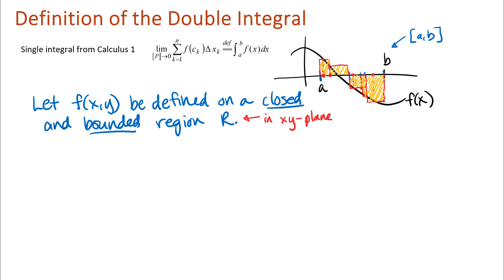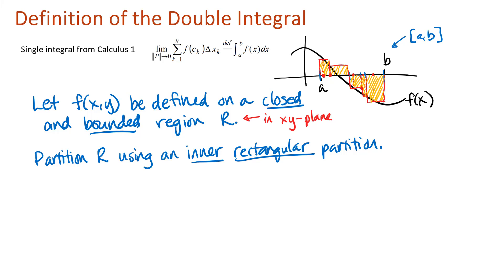In the single integral, once you had your function defined on an interval, you chopped that interval into pieces. The formal language for this is that we partition the region R using an inner rectangular partition. The pieces in the partition stay inside region R because the function may not be defined outside R.